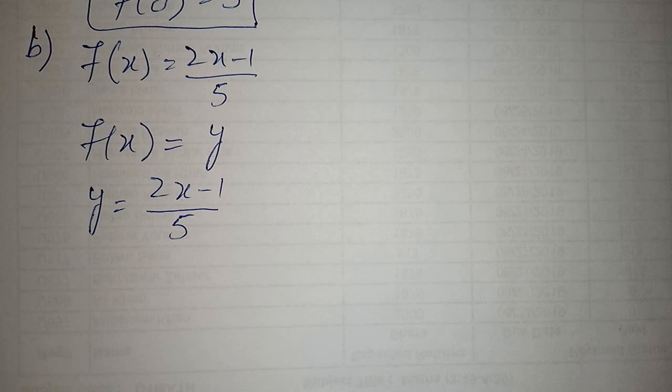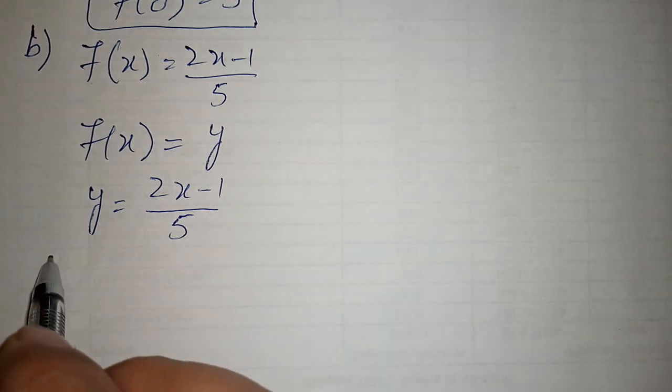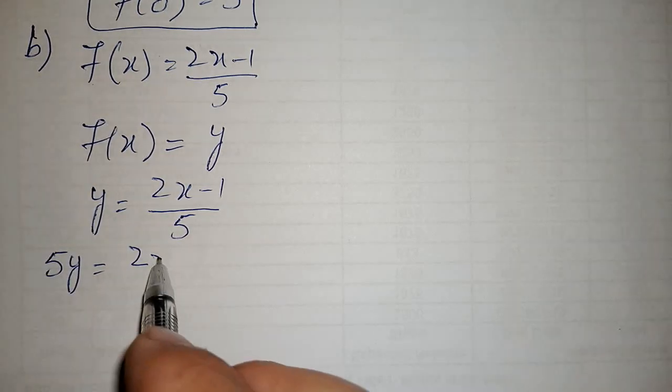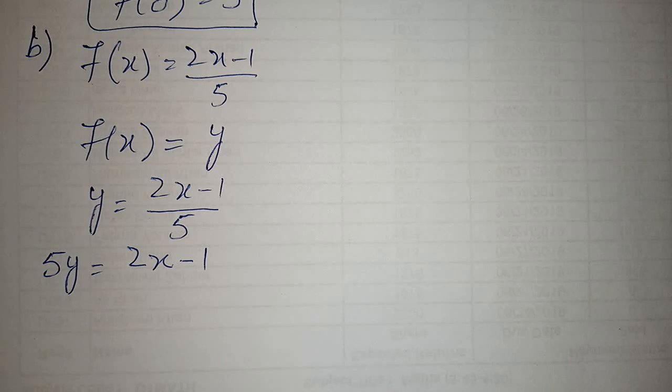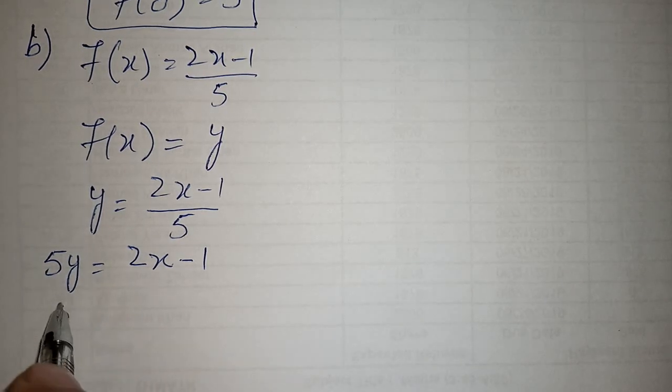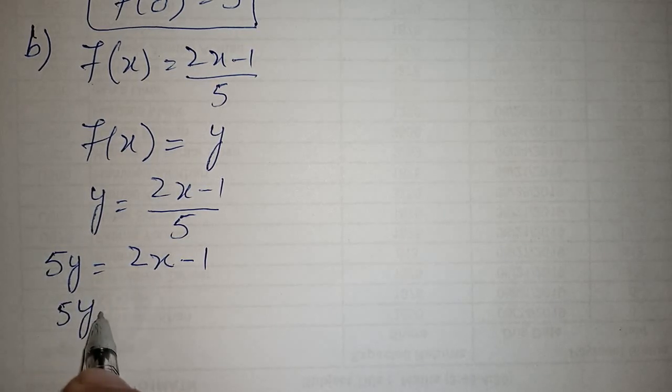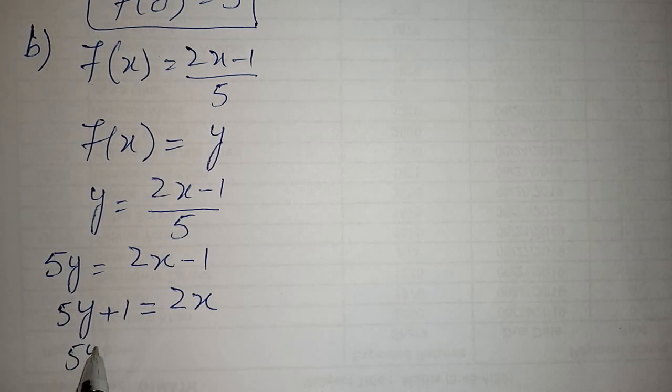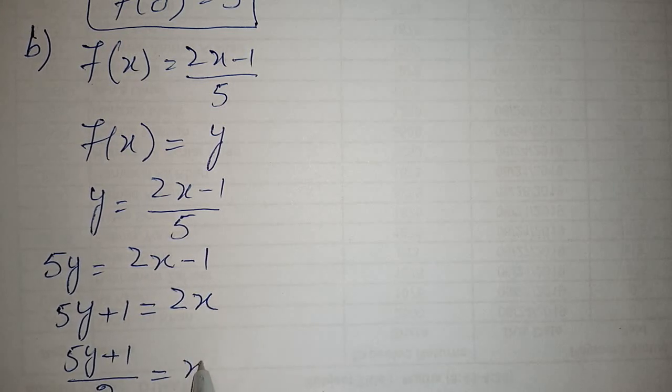Now using the concept of cross multiplication, we multiply 5 with y. 5y is equal to 2x minus 1. When we shift minus 1 to the other side, it becomes positive. 5y plus 1 is equal to 2x. And when we shift 2 to the other side, it divides there. 5y plus 1 upon 2 is equal to x.